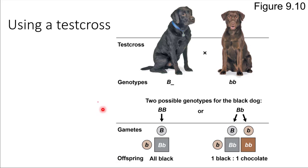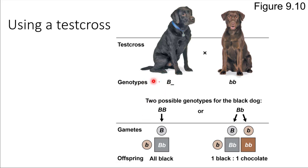We're going to consider this black dog right here. We don't know anything about this dog's background or its parents — all we know is that it is a black dog. Black is dominant to brown. So just from that fact, the fact that this dog looks black tells us it has at least one allele for black hair color, because that's dominant. So we know there's one uppercase allele; we just don't know what that second allele is — it could either be uppercase B or lowercase b.